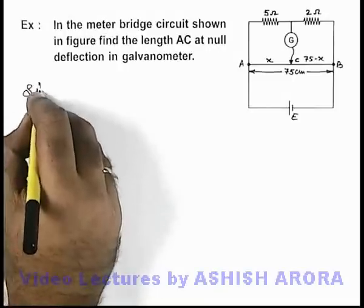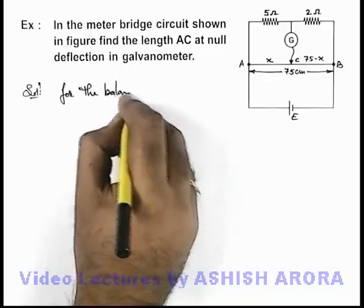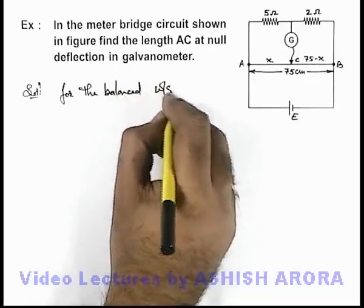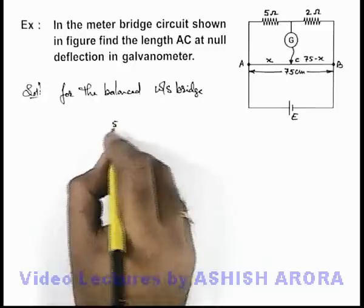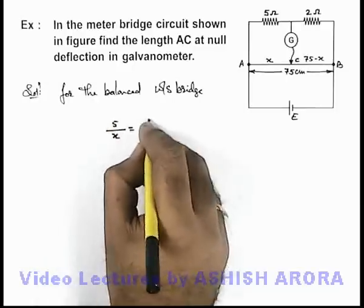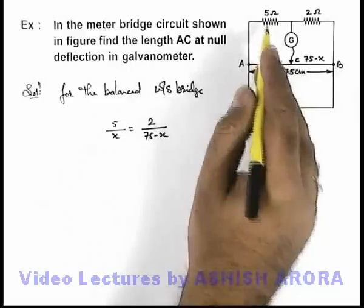So here we can write for the balanced Wheatstone bridge: 5 by x must be equal to 2 divided by 75 minus x, as the ratio of these two resistances must be equal at this situation of null deflection.